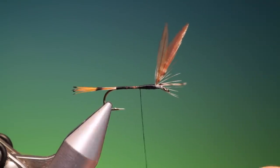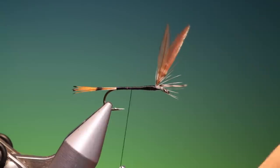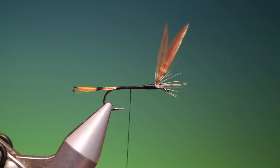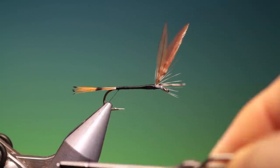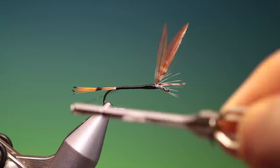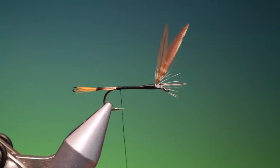Just even out this body. Spin our tying thread anti-clockwise to give it a flat profile. And what we want is a little black butt at the end there. And we'll just go in.